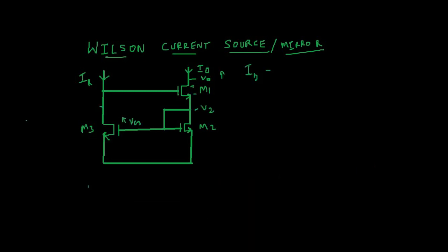We have three MOSFETs M1, M2, and M3. The gate and drain of M2 are connected and M3 is driven by constant current IR. Note that the drain of M3 is connected to gate of M1.